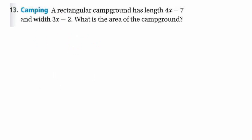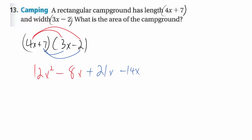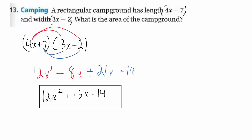Number 13 is just forcing a word problem context for polynomials. Multiplying a base times a height is a good application. So 4x plus 7 is your length and your width. To get area, we multiply length times width using distributive property. We get 12x squared, then 8x, then 7 times 3 gives 21x which is positive, then 7 times negative 2 gives minus 14x, minus 14 because there's no x on either of those. Combine like terms and put in descending order — that's your answer.